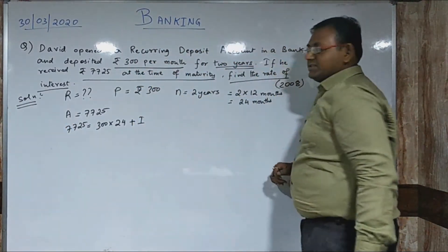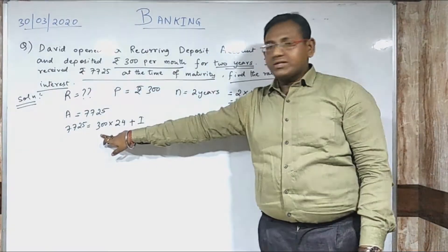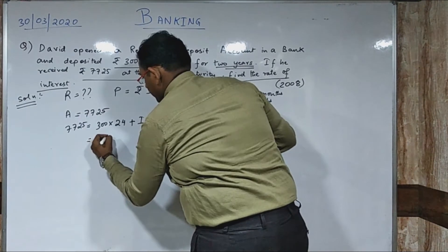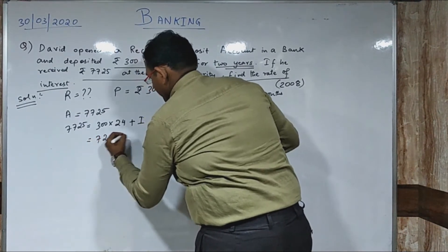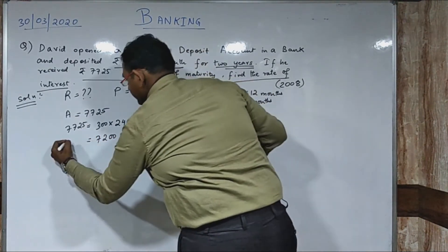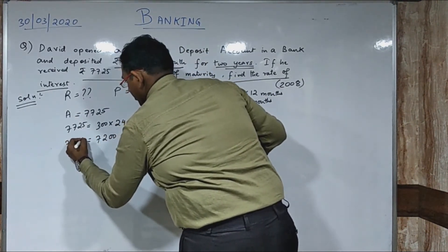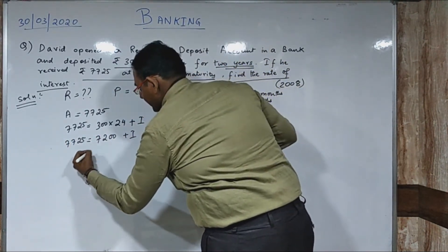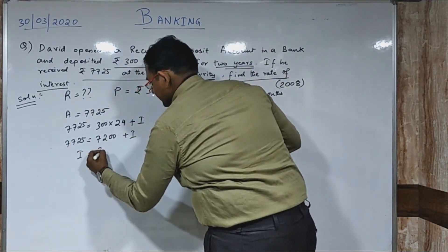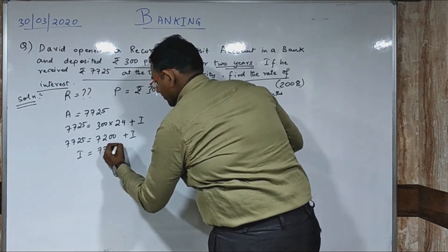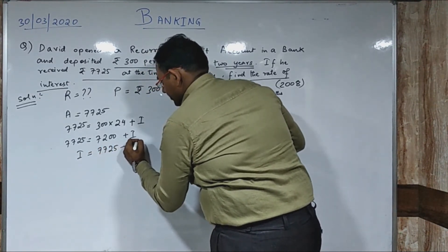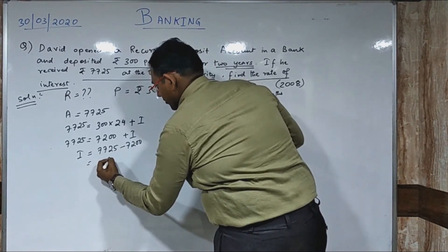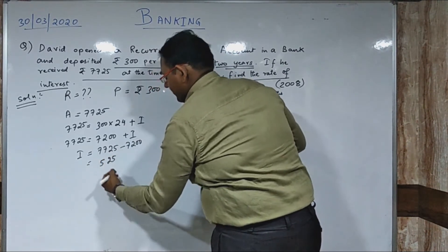Let us calculate this. 24 into 300 gives 7200. So amount equals 7200 plus interest, and that equals 7725. Taking 7200 to the other side: interest equals 7725 minus 7200, which gives rupees 525.